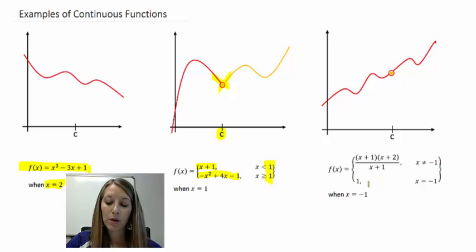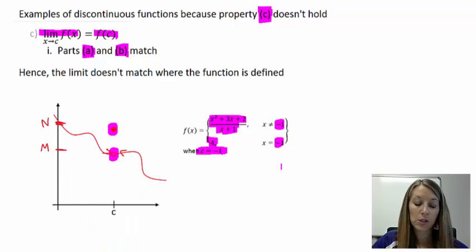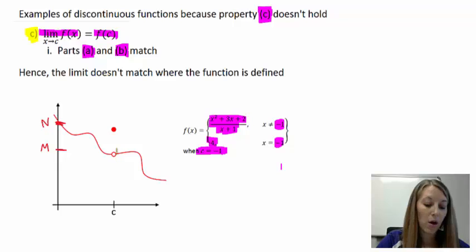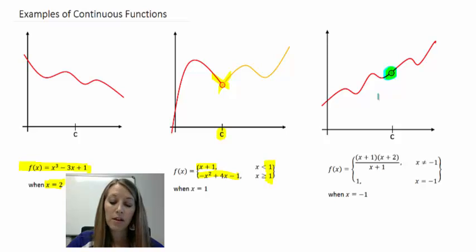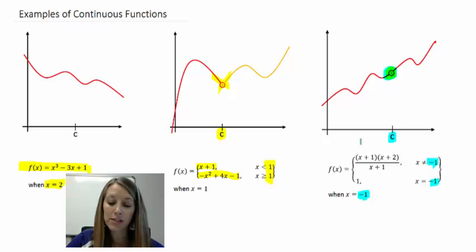The third example is like the property C counterexample, but here it works. There is a hole in the graph and the function is also defined at that point, and they do match up. Therefore the graph is continuous all the way through. Whatever is happening at negative 1 — that c value — it all matches up, so the function is continuous.